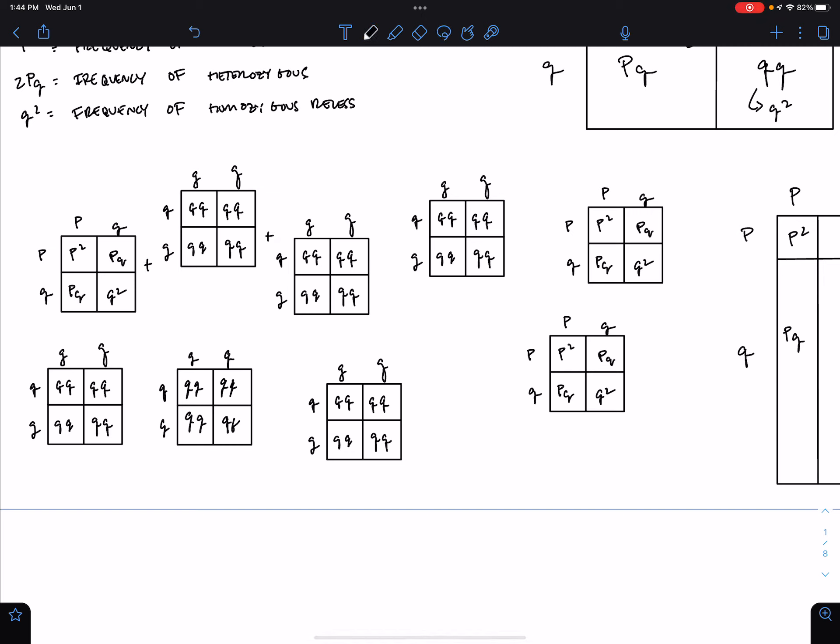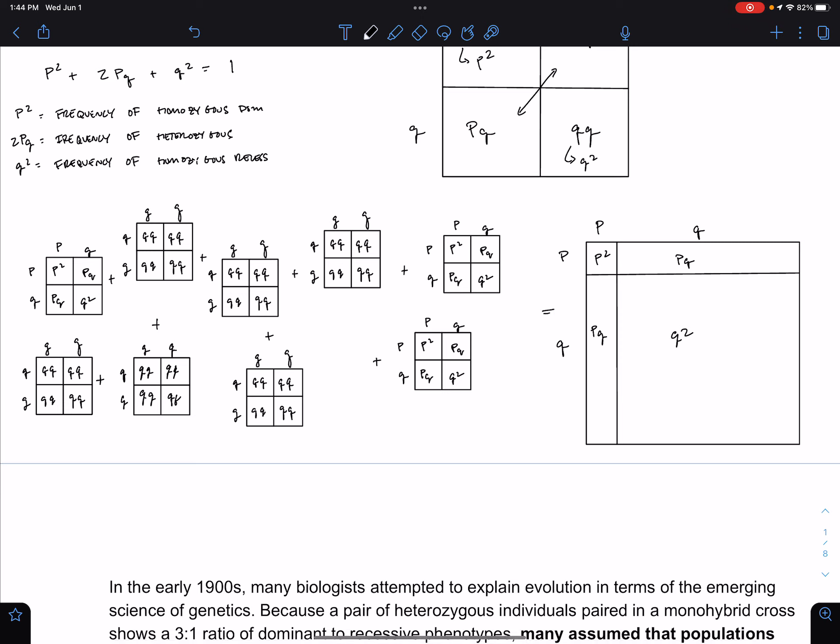If we took all these individual matings and we added them all together, we would see that it was equal to this giant weighted Punnett square.